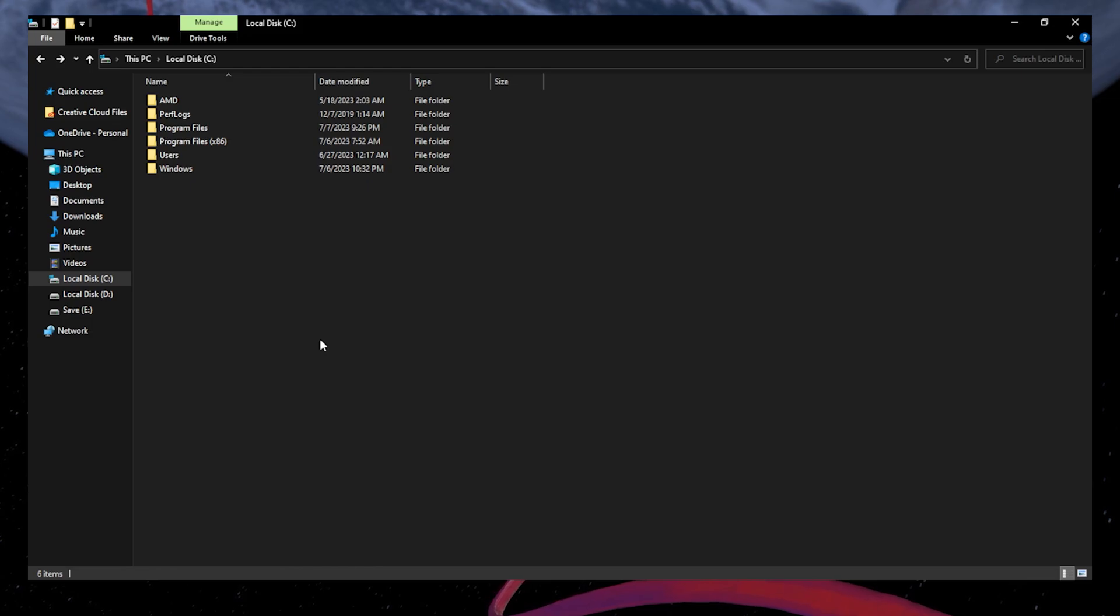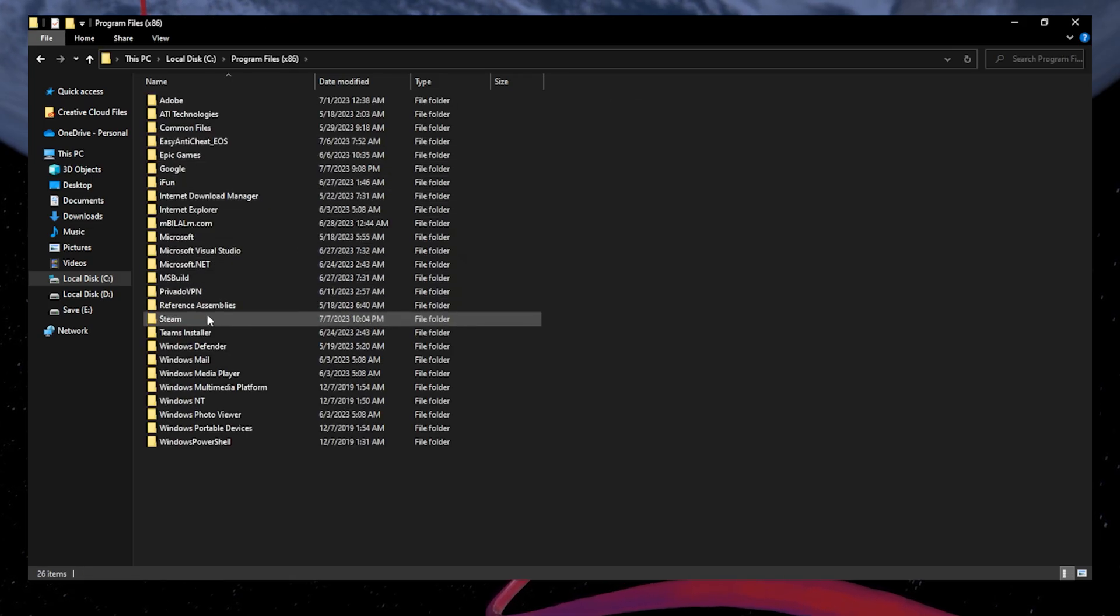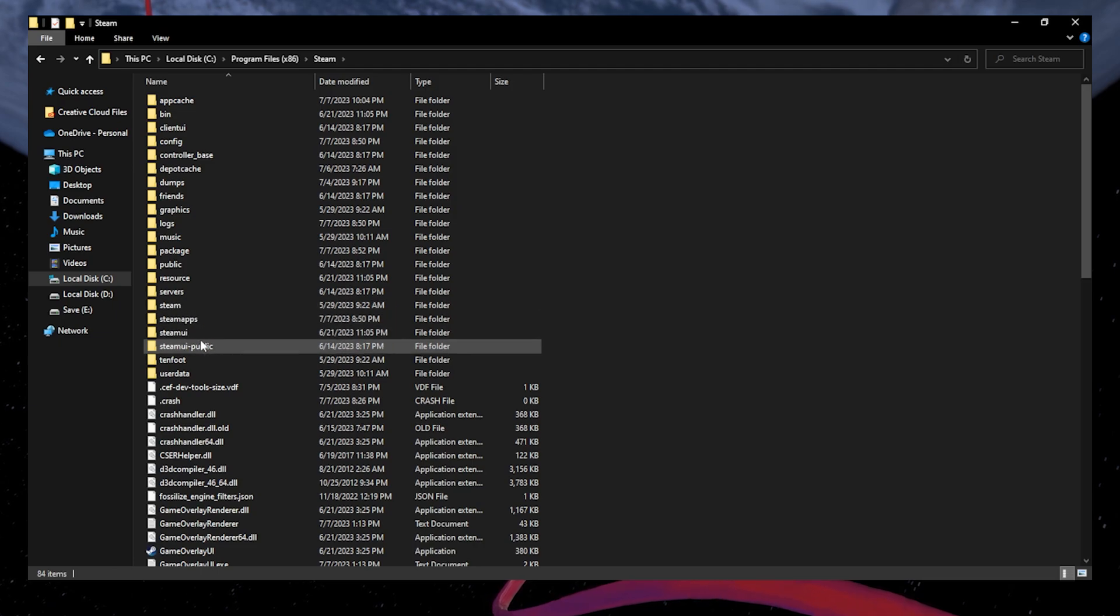First, open your File Explorer and navigate to the drive on which you save Epic or Steam games on. Program Files, Steam, Steam Apps, Common.